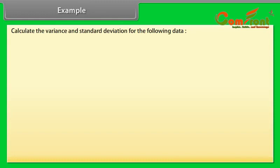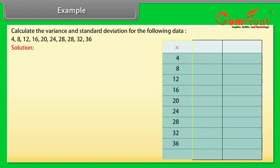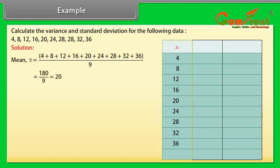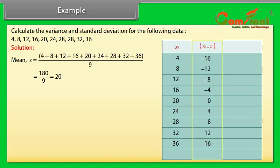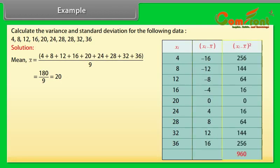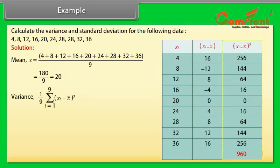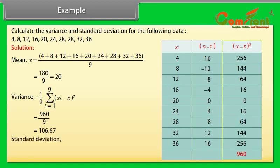Example: Calculate the variance and standard deviation for ungrouped data. Find the mean by summing all observations and dividing by 9. In the second column find the difference of observations from X̄, and in the third column find the squares of those differences, whose sum is 960. Variance = Σ(Xᵢ − X̄)² / 9 = 106.67. Standard deviation = √106.67 ≈ 10.33.